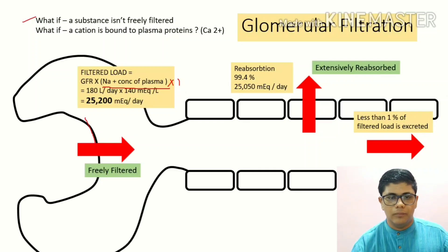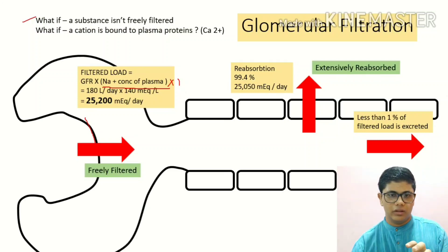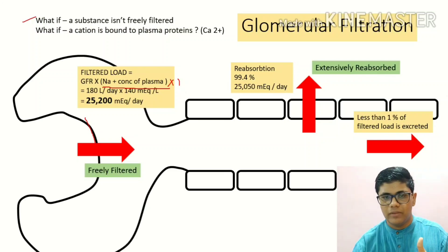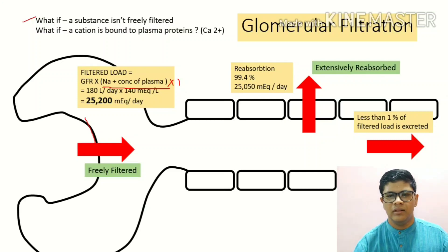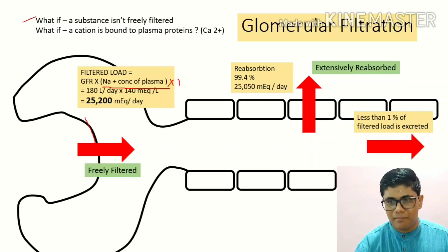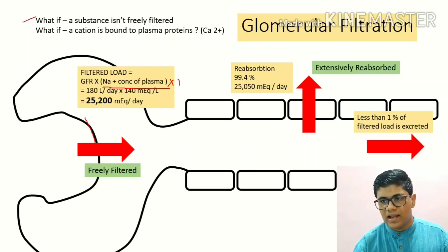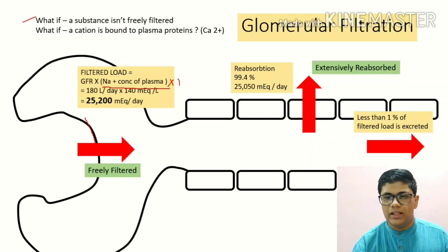The filtered load: 180 liters of ultrafiltrate is formed each day, and each liter contains 140 milliequivalents of sodium — the ECF sodium concentration. So the filtered load is 25,200 milliequivalents per day. Average sodium intake is about 150 milliequivalents. In order to maintain balance, kidneys must excrete less than 1% of the filtered load, meaning 99.4% of the filtered load must be reabsorbed. This reabsorption is what we are going to study now.